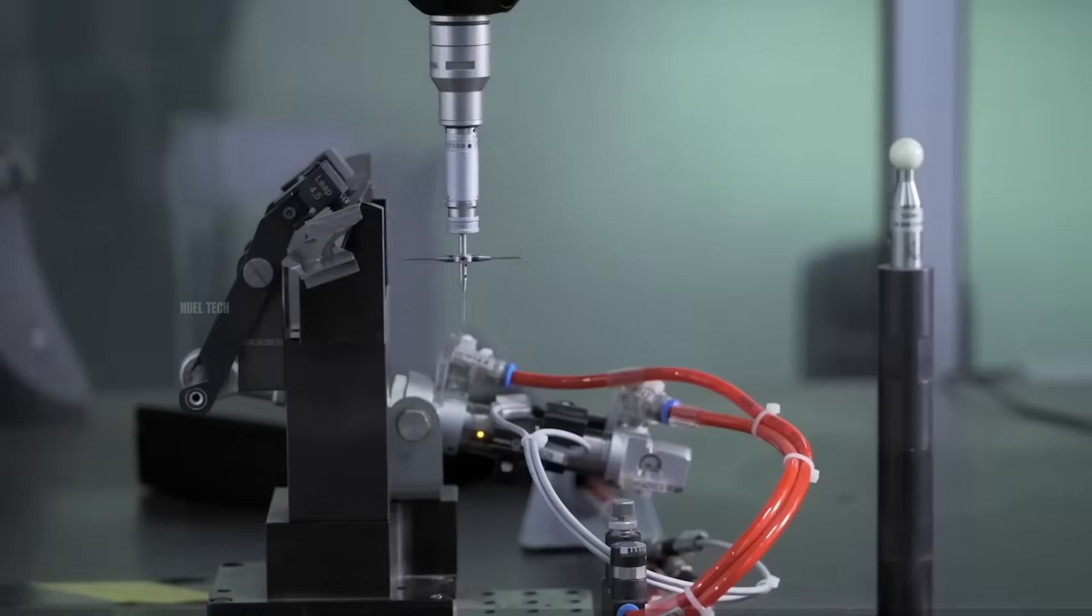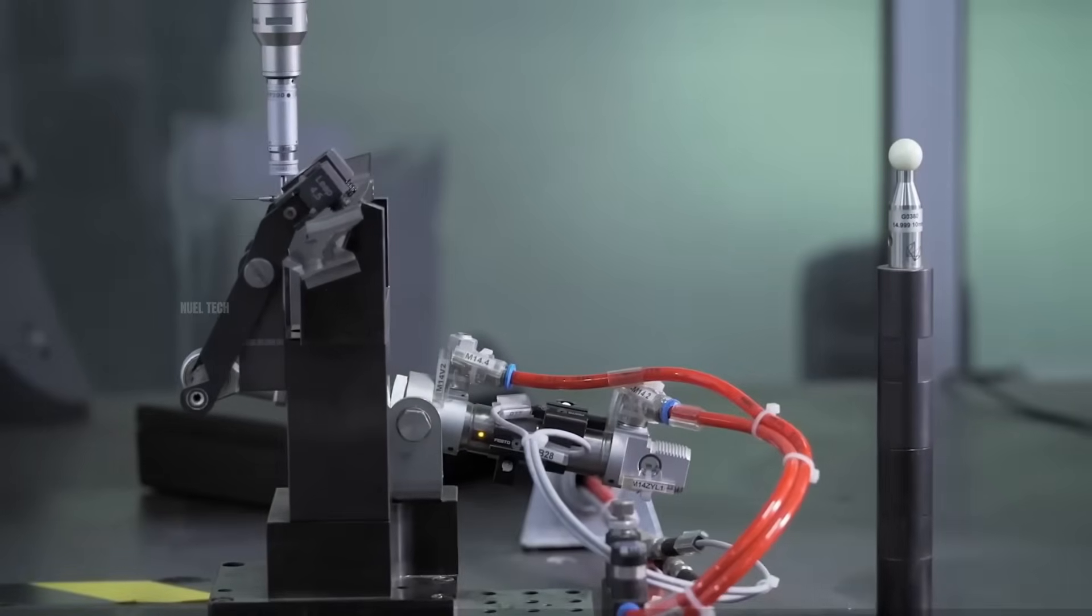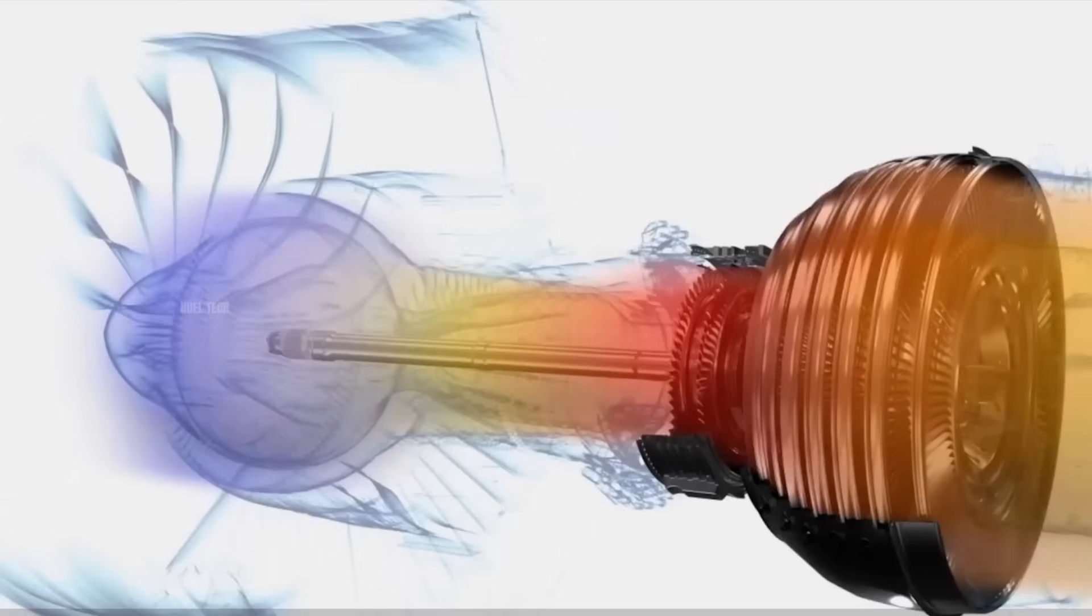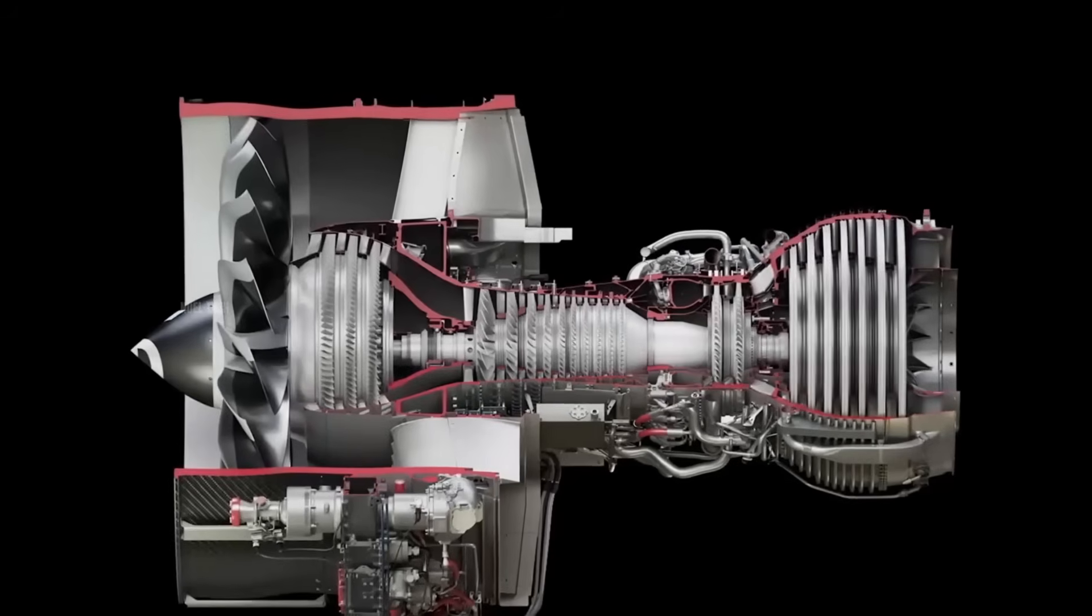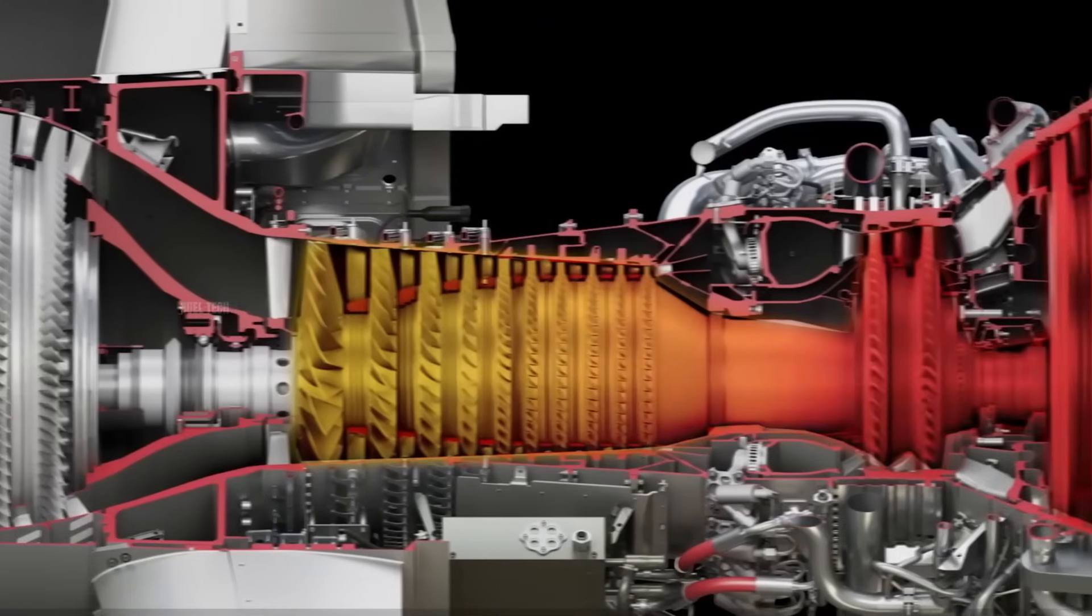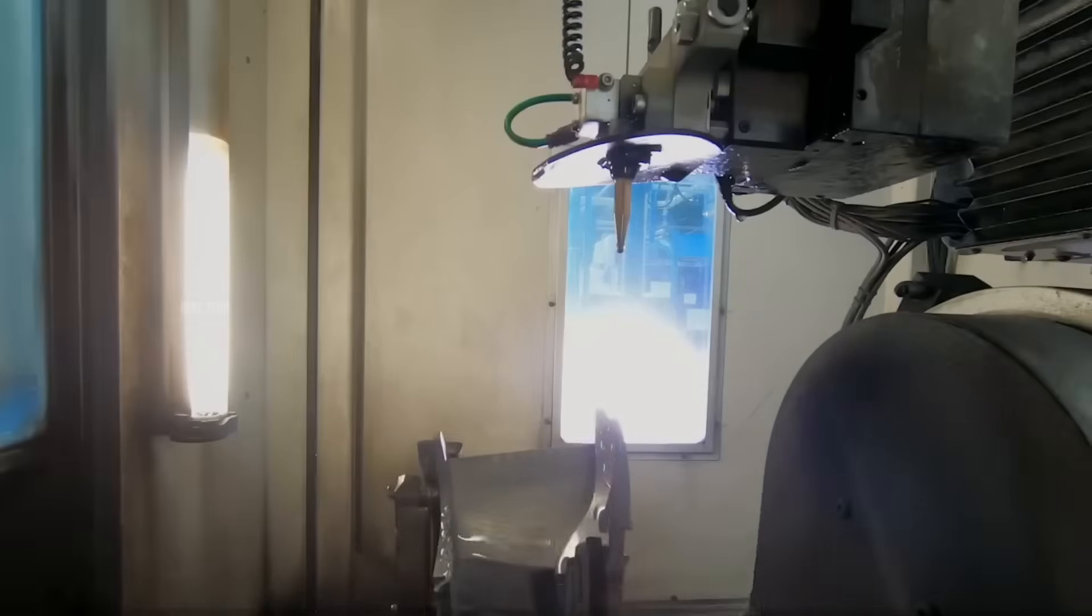A final inspection is carried out to ensure dimensional and weight accuracy. This is critical because turbine blades spin at extremely high speeds, and even a tiny weight imbalance can cause vibrations that could damage the engine.